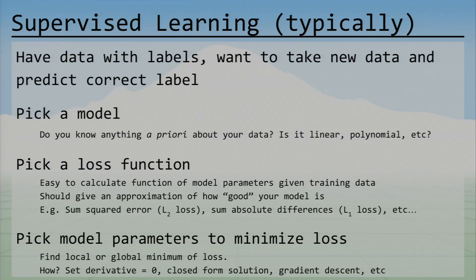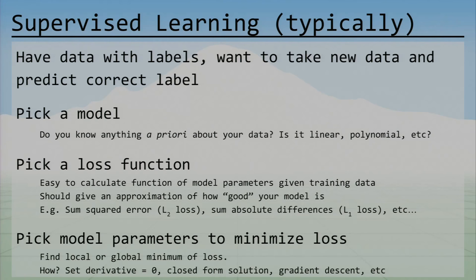Supervised learning is where you have data with labels, and given new data you want to predict the correct label. There are several components: you pick a model that best approximates what you know about your data, and you pick a loss function that tells you how good your model is. The loss function should be easy to calculate from your model parameters. Standard examples include L2 loss (squared error) and L1 loss (sum of absolute differences, Manhattan distance).